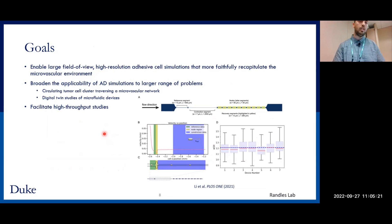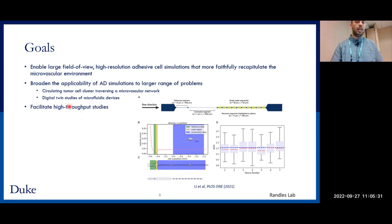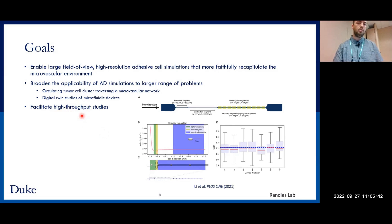For example, going back to that circulating tumor example, we'd like to be able to observe a circulating tumor as it traverses a capillary bed, or apply these simulations for medical device design. An added benefit would be to facilitate high-throughput studies. For a single adhesive dynamic simulation, it can be very time consuming, and in a scientific experiment you perform many trials — the same applies to computation. If we could lower the time to solution for these simulations, we could facilitate these kinds of studies.